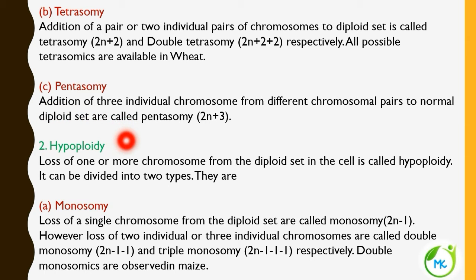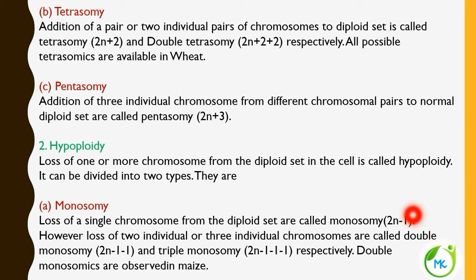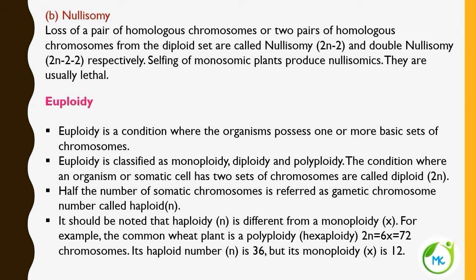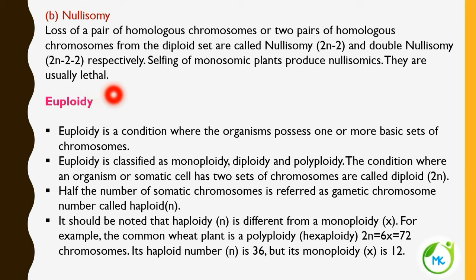Now we see the second kind of aneuploidy: hypoploidy, that is deletion. Loss of one or more chromosomes from the diploid set is called hypoploidy, and it is of two types. First, monosomy — loss of a single chromosome from a diploid set, that is 2N−1. You can also find double monosomy (2N−1−1) or triple monosomy (2N−1−1−1). Double monosomics are observed in maize. The second kind is nullizomy — loss of a pair of homologous chromosomes, 2N−2. Double nullizomy is 2N−2−2. Selfing of two monosomic plants can produce nullizomics. Nullizomy is always lethal — it will lead to the death of the organism.